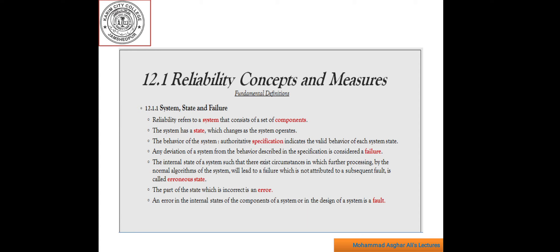The behavior of the system — an authoritative specification indicates the valid behavior of each system state. Any deviation of a system from the behavior described in the specification is considered a failure. The internal state of a system such that there exist circumstances in which further processing by the normal algorithm of the system will lead to a failure — which is not attributed to a subsequent fault — is called an erroneous state. The part of the state which is incorrect is an error.